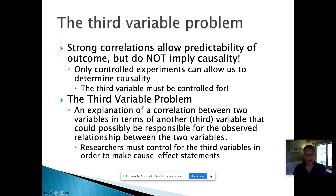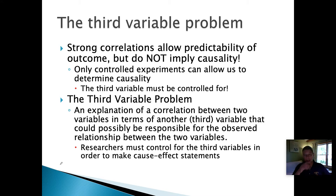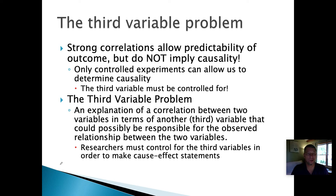Good morning and welcome to the second of two videos on chapter two, all about research methods used by psychologists. We're going to begin by talking about what's known as the third variable problem. This is an end to our discussion of correlations. Correlations are more effective than descriptive observations, but they can tell you what's going to happen without telling you why. Strong correlations allow predictability of outcome, but they do not imply causality — they don't give you a cause and effect relationship.